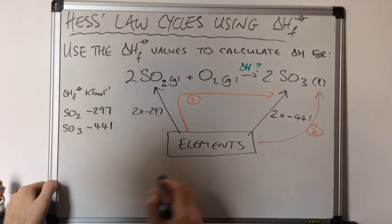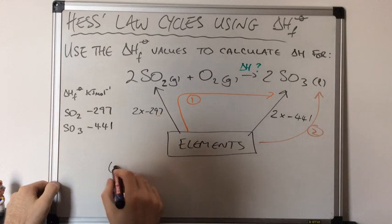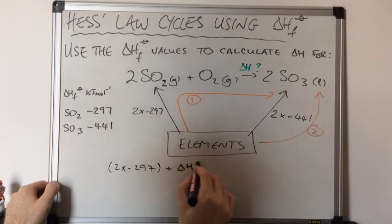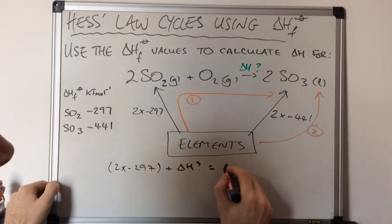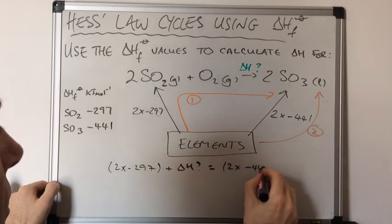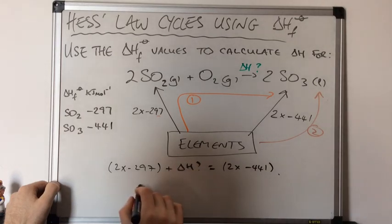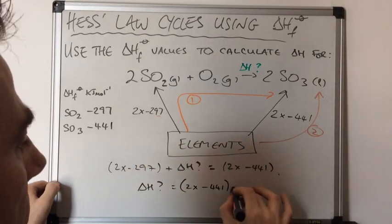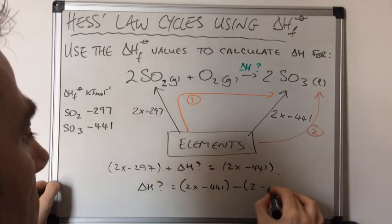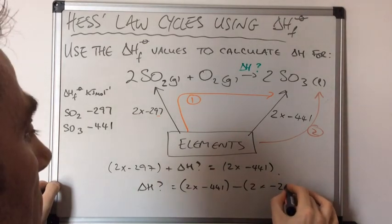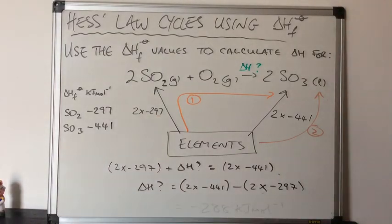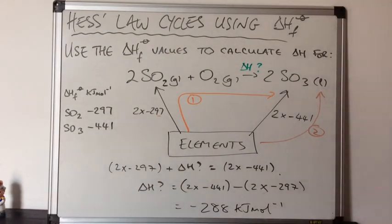Putting the numbers in: two times minus 297 plus the unknown value equals two times minus 441 (route 2). Rearranging, the unknown ΔH equals two times minus 441 minus two times minus 297, which gives us a value of minus 288 kJ/mol.